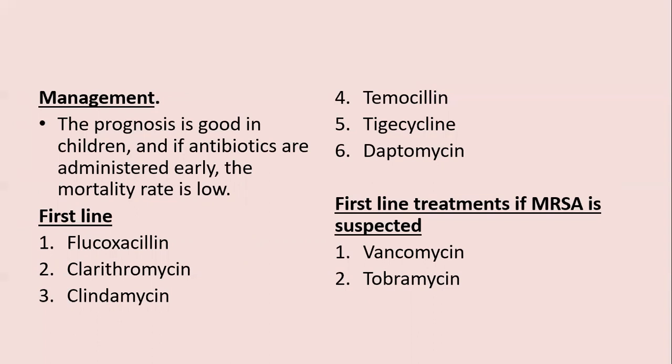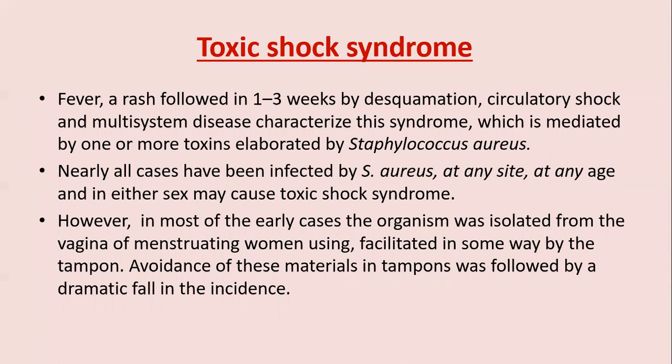Toxic shock syndrome (TSS) is characterized by fever, a rash followed in one to three weeks by desquamation, circulatory shock, and multi-system disease, mediated by one or more toxins elaborated by Staph. aureus. Nearly all cases have been infected with Staph. aureus at any site; it can occur at any age and in either sex.